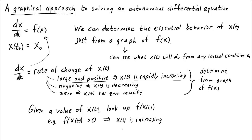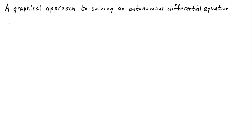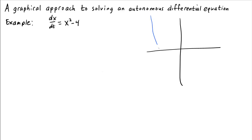We can continue this process, looking at what happens to x of t as t continues to get larger. As it turns out, this ends up being a fairly simple process. Let's demonstrate this with an example: the differential equation dx/dt equals x squared minus 4. We can determine the dynamics of the solution x of t for any initial condition simply by looking at the graph of f of x equals x squared minus 4.